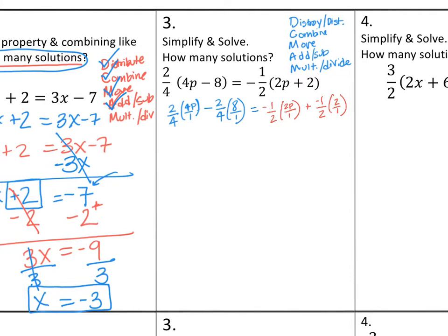So now we have, from the left-hand side, 2 times 4p is 8p, 4 times 1 is 4, minus 2 times 8 is 16, 4 times 1 is 4, equals negative 1 times 2p is negative 2p, over 2 times 1, which is 2, plus negative 1 times 2 is negative 2, 2 times 1 is 2. On the blue side, 4 goes into 8p, 2p times. 4 goes into 16, 4 times.